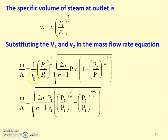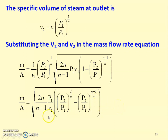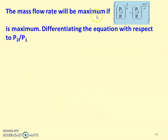Taking the value outside the square root inside the bracket: when 1/v1 is taken inside, it becomes 1/v1 squared under the root, and one v1 in the numerator cancels, leaving 1/v1 in the denominator. The expression for mass flow rate per unit area becomes: M/A equals square root of (2n by (n minus 1)) times (P1/v1) times ((P2/P1) to the power 2/n minus (P2/P1) to the power (n plus 1)/n). Here P1 is inlet pressure, v1 is inlet specific volume, n is the polytropic index, and the deciding parameter for mass flow rate is P2/P1.